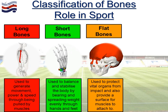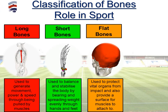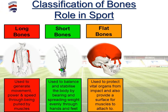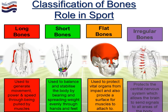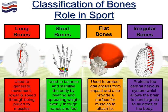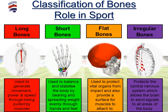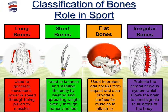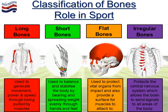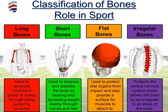Flat bones are used to protect vital organs — for example, the cranium which obviously protects the brain — and they also provide a nice flat surface for muscles to attach to. Irregular bones, which is the vertebral column, are individual vertebrae stacked on top of one another, which protects what we call the central nervous system — a series of very important nerves that send signals from the brain to all other areas of the body.